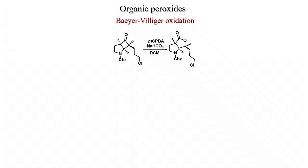This reaction was also applied in natural product synthesis. A complex structure with many chiral centers, under MCPBA and sodium bicarbonate in dichloromethane conditions, gives the lactone product selectively without disturbing any chiral center — the lactone forms and all stereocenters are retained in the product.